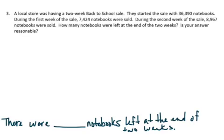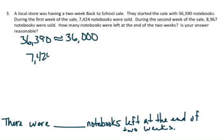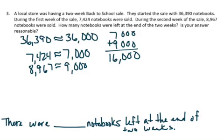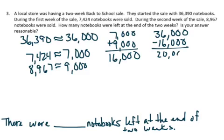So let's take our numbers. At the start of the sale, they had 36,390 books, and I'm going to round that to the nearest thousand, which would be 36,000. During the first week of sales, they sold 7,424, which rounds to 7,000. In the second week of sales, they had 8,967, and that rounds to 9,000. So 7,000 plus 9,000 is equal to 16,000. And the difference, so I have 36,000 minus 16,000. There should be about 20,000 notebooks left over.